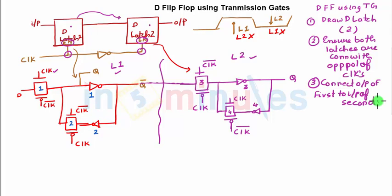So let's take case one here. Let's assume my clock to be equal to one, that means my clock bar is going to be equal to zero. Now let's see which all transistors are on.